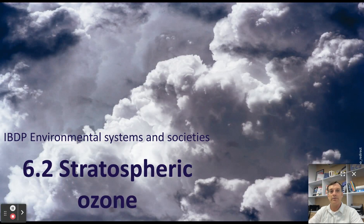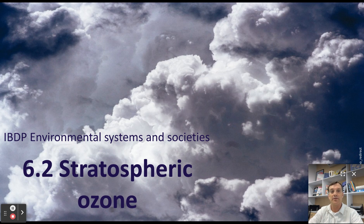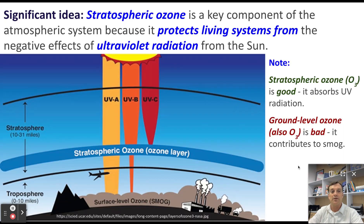Welcome. This is a quick video from the IB Environmental Systems and Societies course, Topic 6: Atmospheric Systems. Today's video will focus on the formation and dynamic equilibrium of stratospheric ozone and how it protects life on Earth. The big idea here is that ozone found in the stratosphere protects living organisms on the surface of the planet from the sun's ultraviolet radiation.